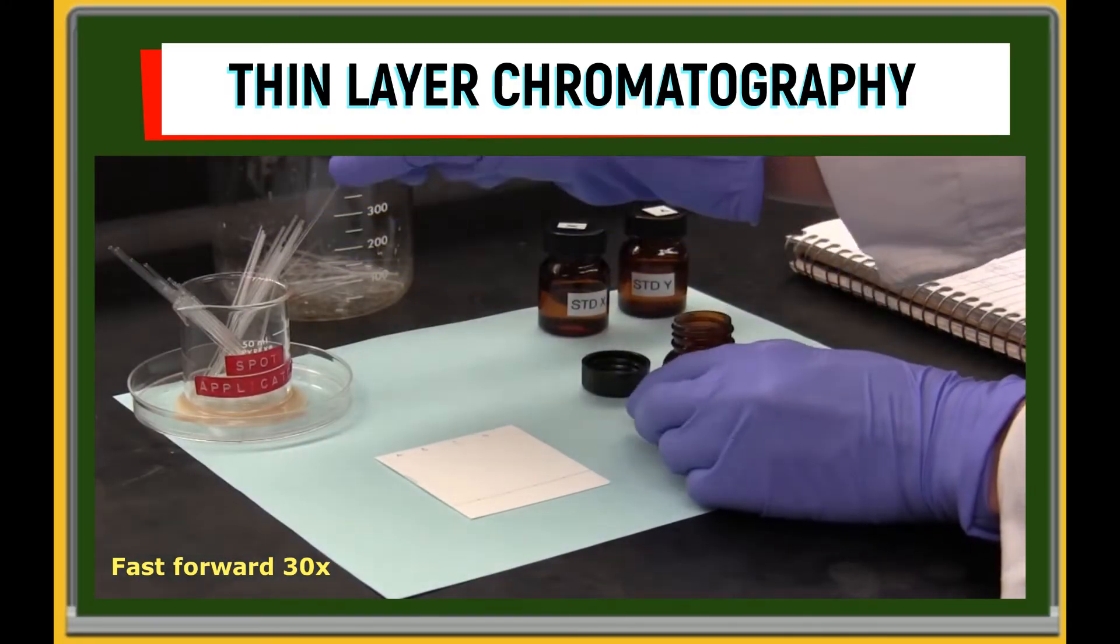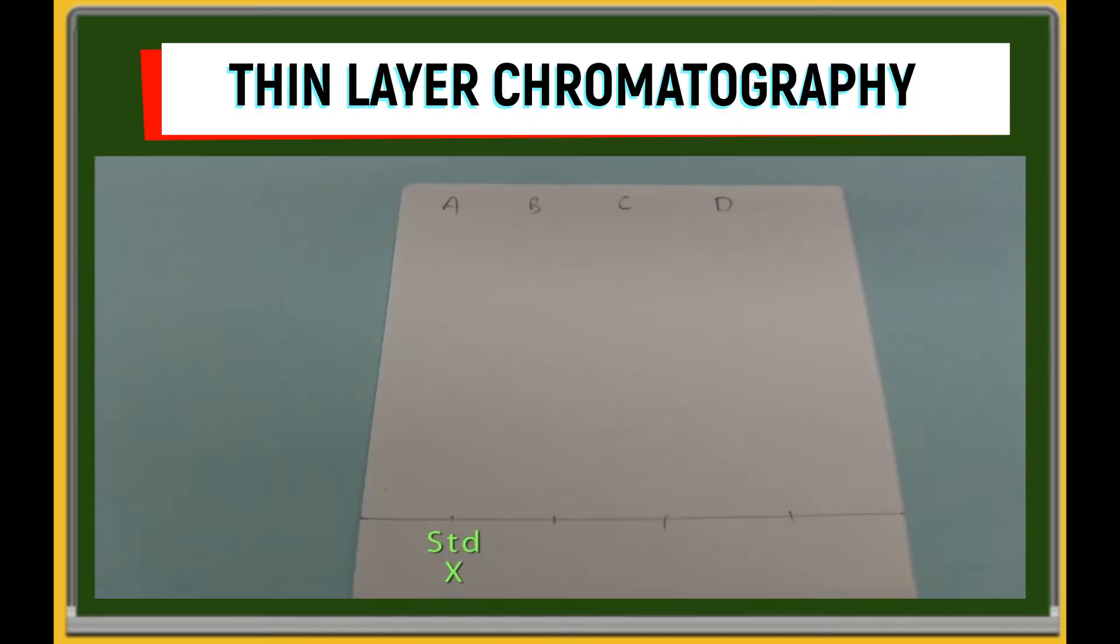To clarify, we have spotted standard X in lane A, standard Y in lane B, mixture of X and Y in lane C, and the unknown in lane D.